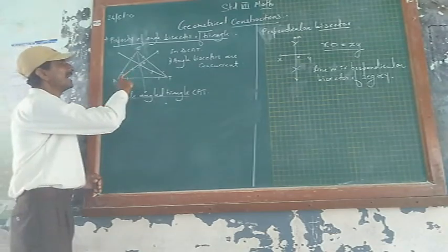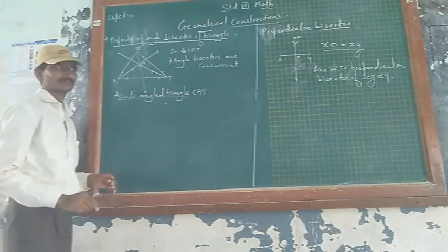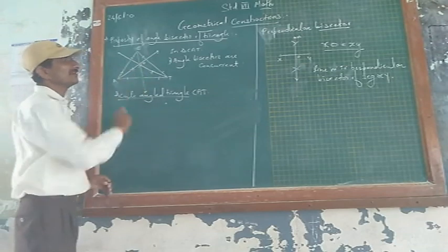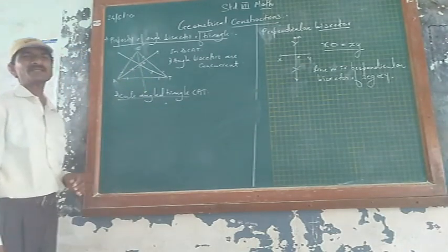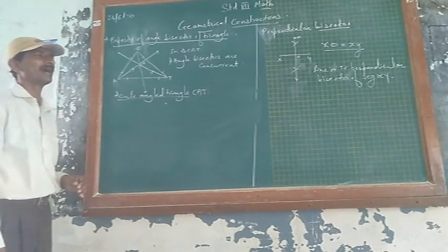So here, these 3 angle bisectors are concurrent. From this, what do you understand? That angle bisectors of any triangle are concurrent.